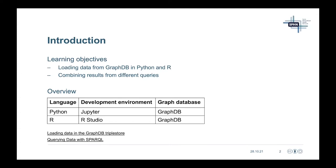In today's talk I'm going to handle two topics. The first one is how to load data from GraphDB in Python and R. This will involve steps such as handling dependencies, setting up a connection to a SPARQL endpoint, running a SPARQL query, and also retrieving the results. The second topic is how to go from running a single query to running multiple queries and combining these results within Python and R.